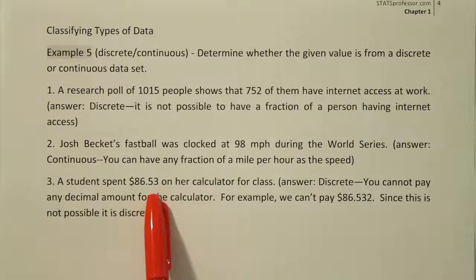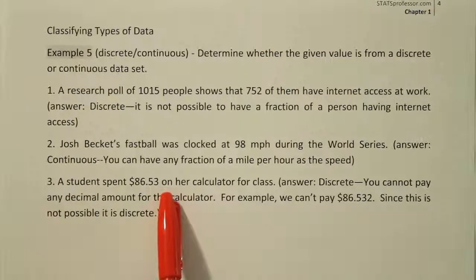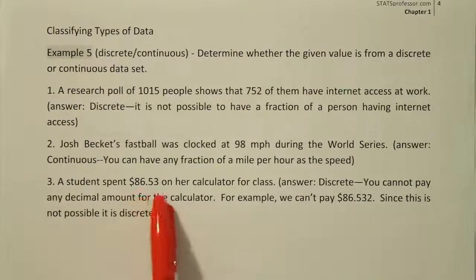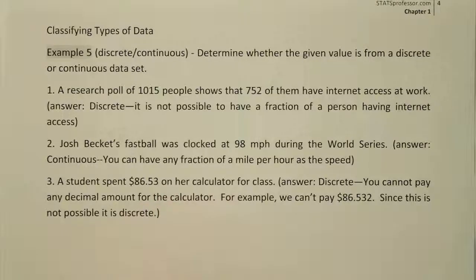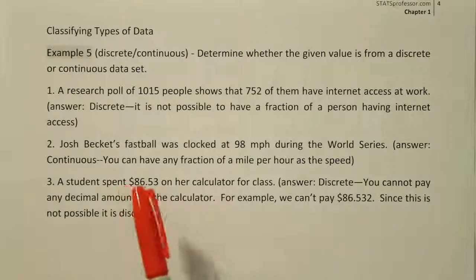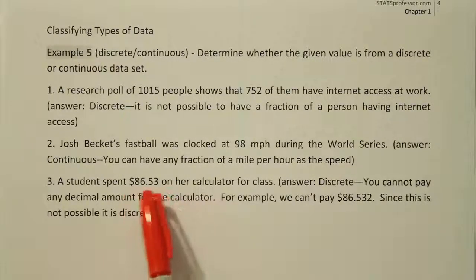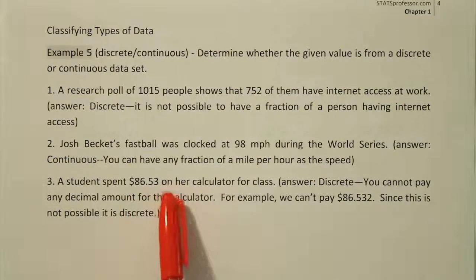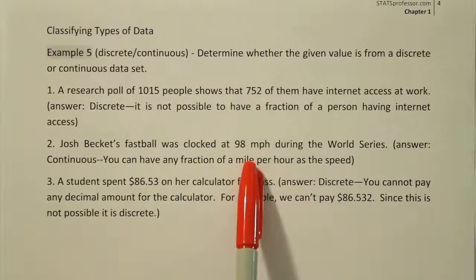There are cases where money is continuous — for example, when dealing with a computer transaction or calculating accruing interest. You might have any fraction of a penny involved in those calculations. But when paying in hard currency, you'd actually have to pay to the nearest penny, which makes it discrete in my opinion. So this is kind of a gray area question, and most professors probably steer away from it for a test question. Something like number two or number one is a better example of a test question.